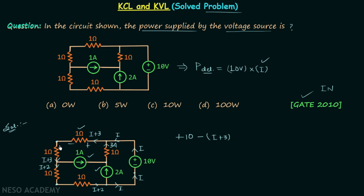Moving forward we have one more resistance of 1 ohm through which I plus 3 current is flowing, giving minus (I plus 3). Similarly for the next resistor we have minus (I plus 2), and for the last resistor we have minus (I plus 2). Then we return to the same starting point, so we equate the entire expression to zero.